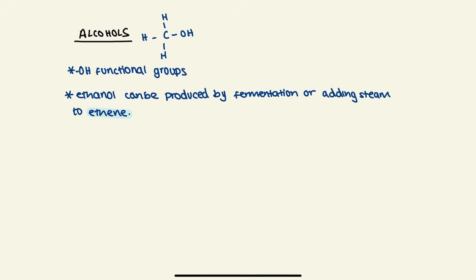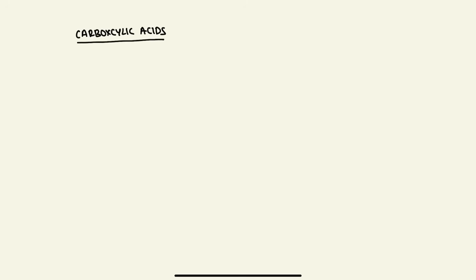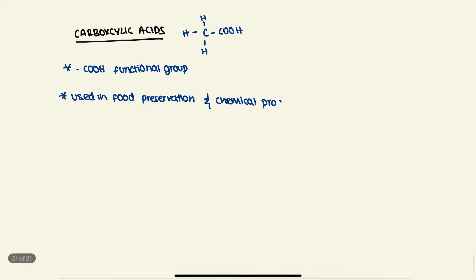Alcohols are organic compounds with OH functional groups. And ethanol can be produced by fermentation or by adding steam to ethene. Used as solvents and fuels. The last group is carboxylic acids, which are organic acids with COOH functional group. They are used in food preservation and chemical production.